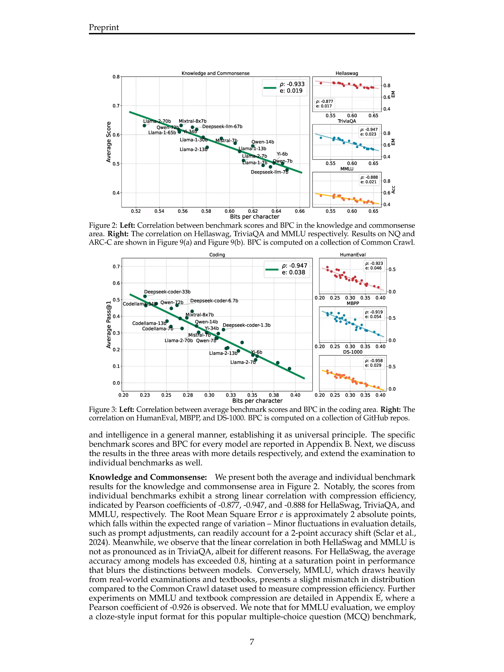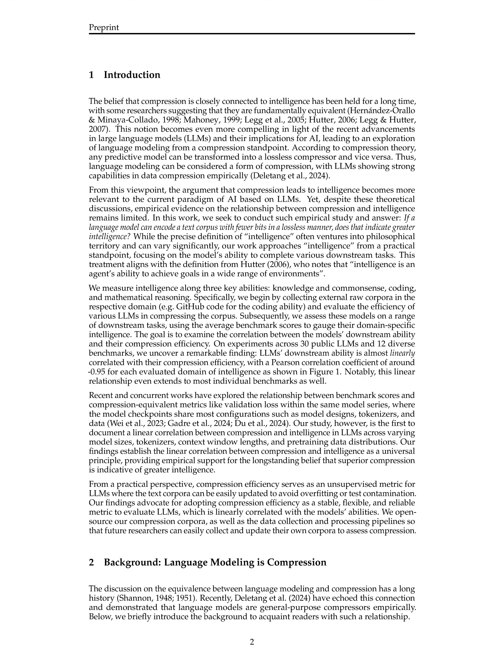This correlation is supported by a high Pearson correlation coefficient of around minus 0.95 for each evaluated domain of intelligence, indicating a linear relationship between compression efficiency and downstream task performance. This finding provides empirical evidence for the long-standing belief that compression is closely connected to intelligence in the context of AI based on LLMs.